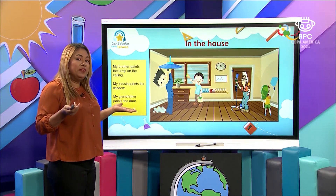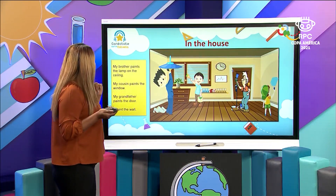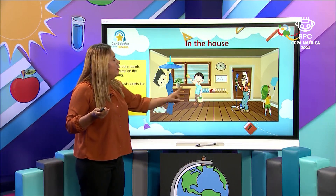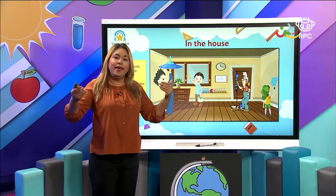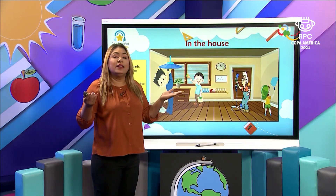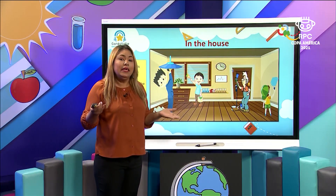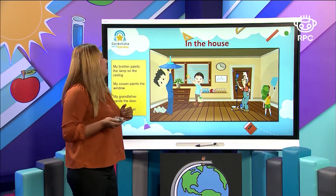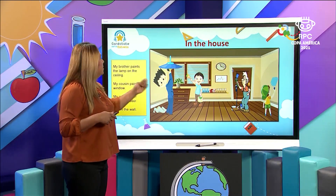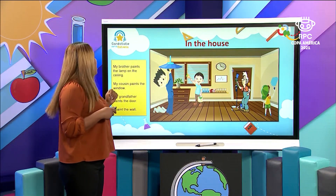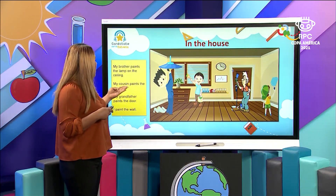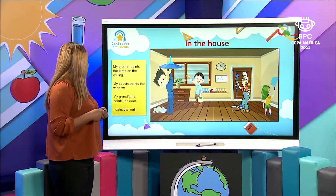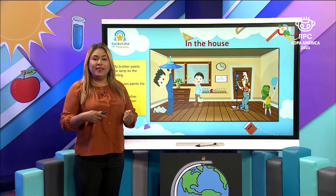What are the members of the family? Yes, we have my brother, my cousin, my grandfather, and me. It means that all of us as a team are painting the house. Let's review: my brother paints the lamp on the ceiling, my cousin paints the window, my grandfather paints the door, I paint the wall.